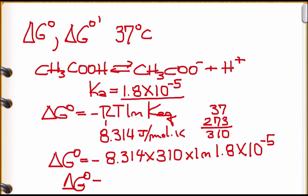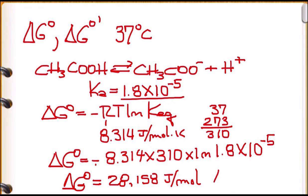The result has a negative sign from the formula but Ka is less than 1, so the overall result is positive: approximately 28,158 J/mol, which can also be expressed as approximately 28.16 kJ/mol.